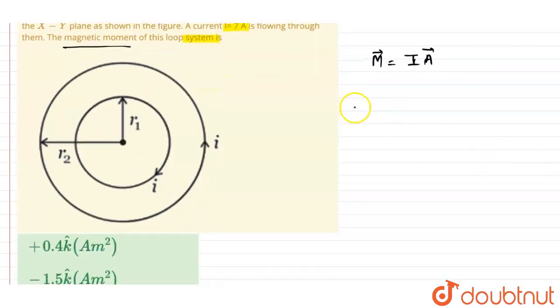Now let's try to find the area vector for both loops. For the A1 loop, it is π r1 squared. The direction of the area vector is always perpendicular to the plane, and here the current is in the clockwise direction.